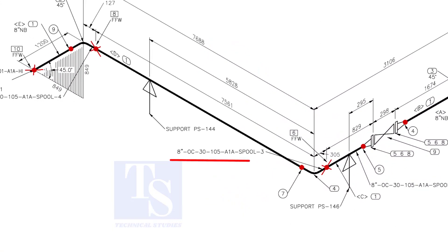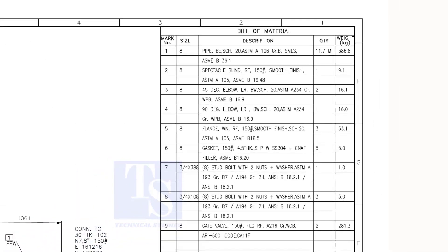Check the details of spool number 3. We know item number 1 is pipe. Check what is item number 4 in the material list. As per the list, item number 4 is a 90 degree long radius elbow.